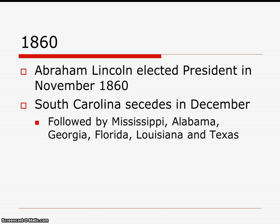In 1860, Abraham Lincoln is elected president in November. As a result, South Carolina, who had threatened to secede during Jackson's presidency, actually secedes in December of 1860. They will be quickly followed by Mississippi, Alabama, Georgia, Florida, Louisiana, and Texas.